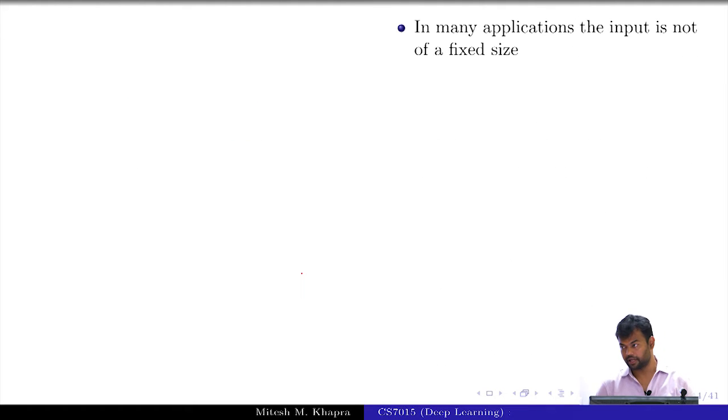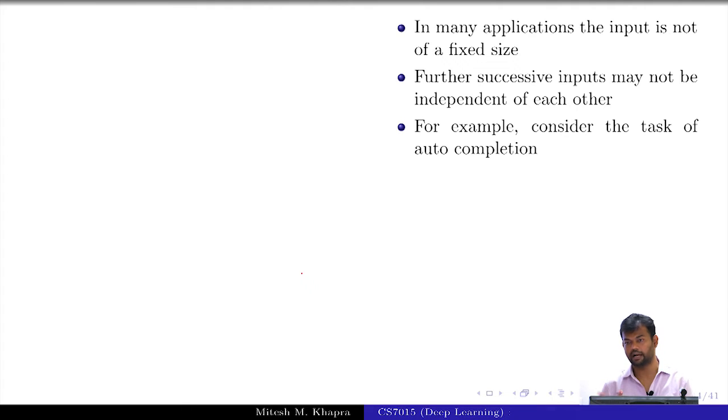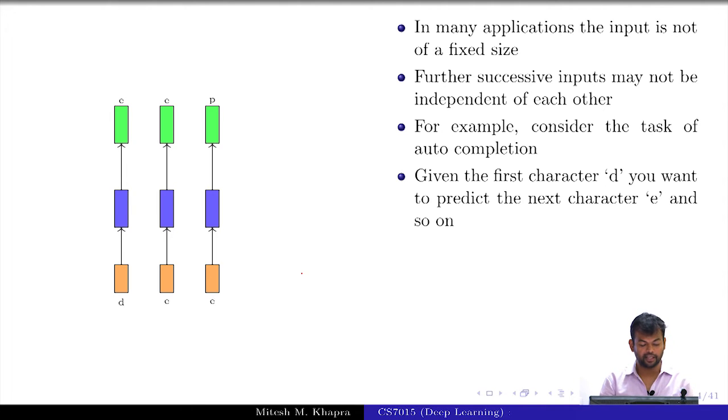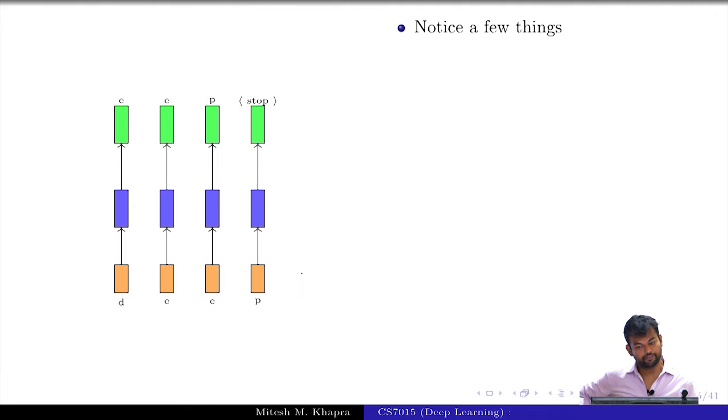But in many applications, the input is not of a fixed size. Also, successive inputs may not be independent of each other. Let us understand this with the example of auto-completion that all of us are used to while typing SMS or WhatsApp. Given the first character D, I want to predict the next character which is E, then once I have predicted E, I want to predict the next character again, and so on until I get the full word. Let us notice a few things.